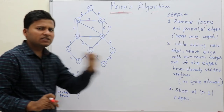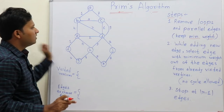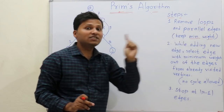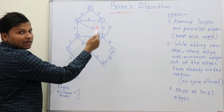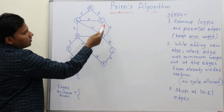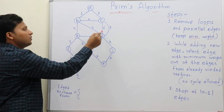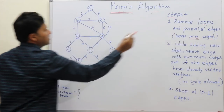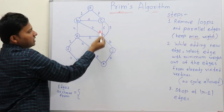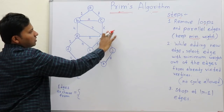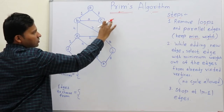For removing the loop, you should not consider any weight or cost — you have to directly remove that loop edge. Now, for parallel edges, you have to consider the weight. For the parallel edge CD, there are two edges parallel to each other because they start from the same vertex and end at the same vertex. We will keep the minimum weight edge. Six is the minimum cost, so we keep that and delete the edge with cost nine.